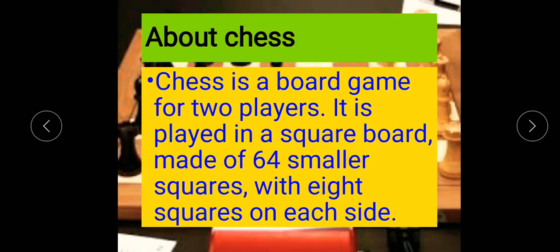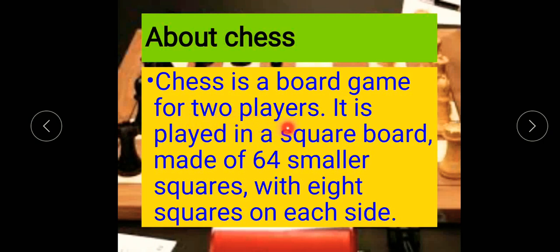Next, about Chess. Chess is a board game for two players. It is played on a square board made of 64 smaller squares with 8 squares on each side. In chess, only two players can play.